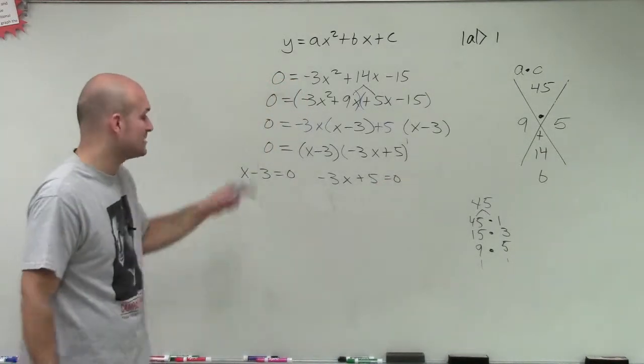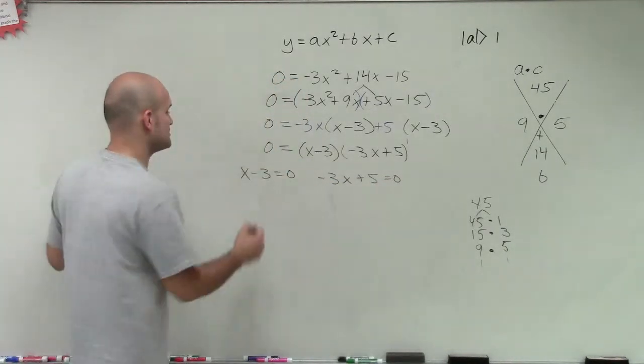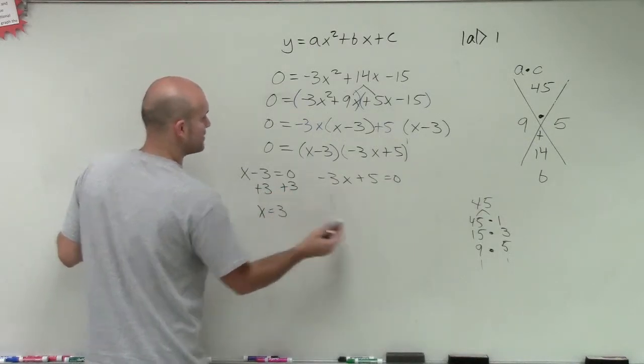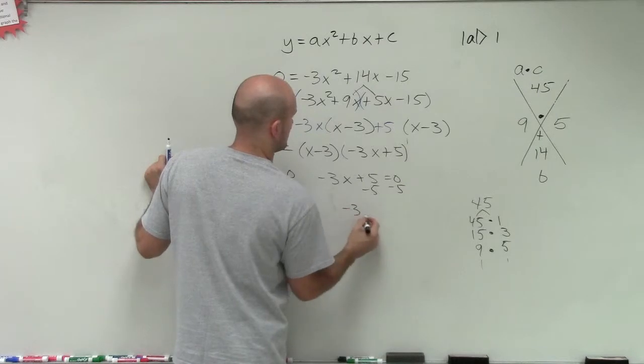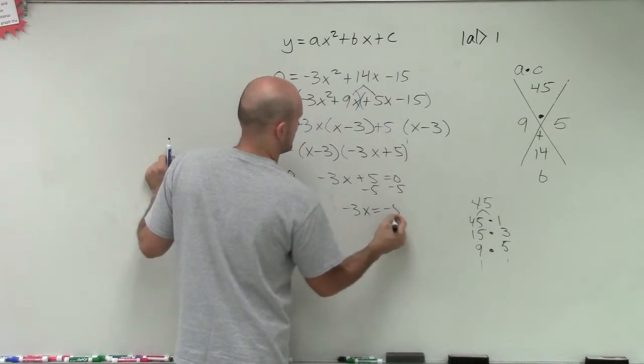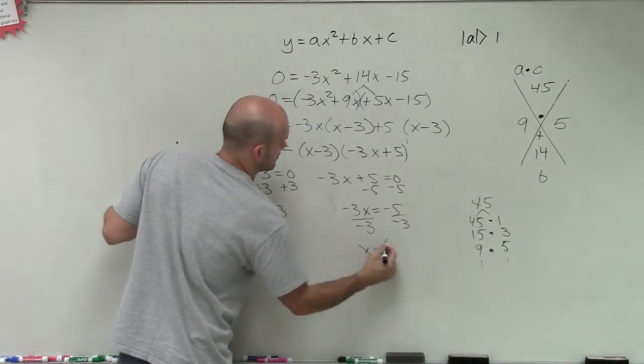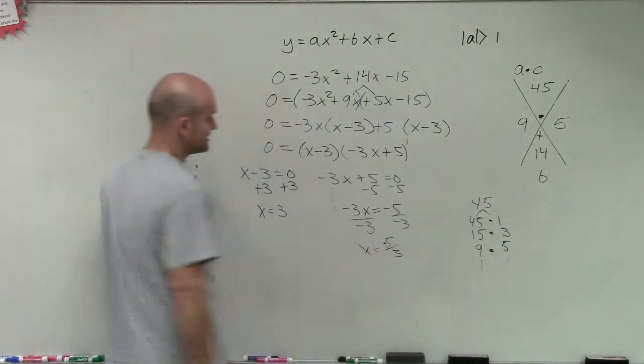So by applying the zero product property, now I have two linear equations that I can solve. Therefore, x equals 3 and x equals 5 thirds.